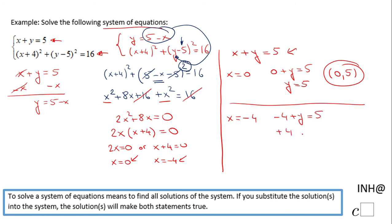Add 4 on both sides and we end up with y of 9, which gives us the ordered pair negative 4 and 9 as a second solution for this system of non-linear equations.